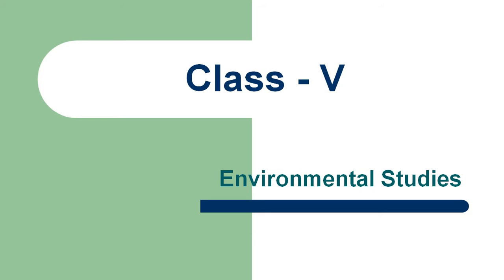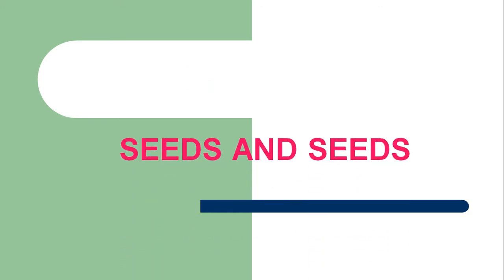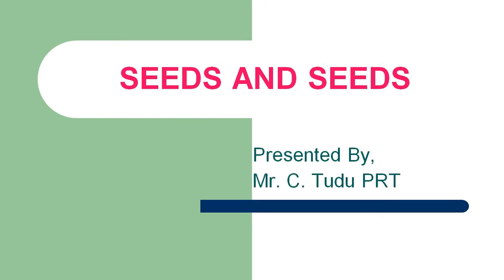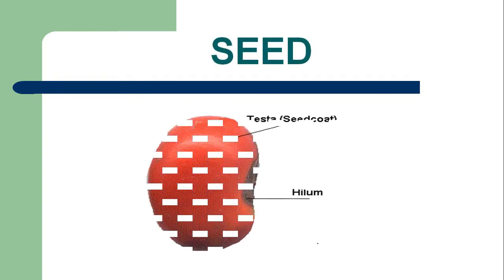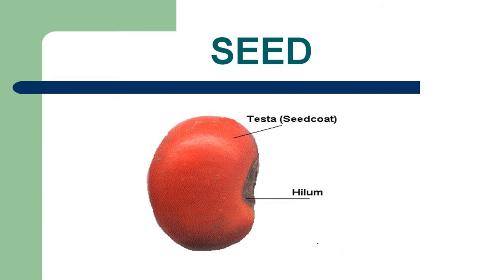Welcome to today's class. Today we are going to discuss Class 5 Environmental Studies. The name of the chapter is Seeds and Seeds. Look at the picture of a seed. The outer covering of the seed is called the seed coat, which protects the seed. The black region of the seed is called the hilum. We know that we get seeds from fruits.